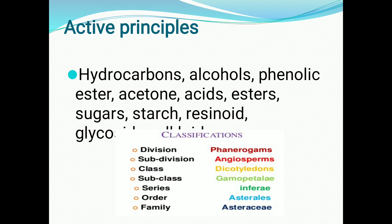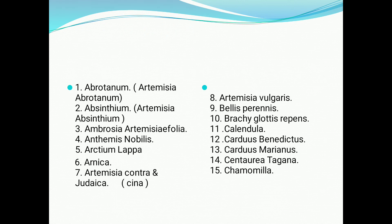The botanical classification of the Composite family is as follows: Division — Phanerogams; Subdivision — Angiosperm; Class — Dicotyledon; Subclass — Gamopetalae; Series — Inferi; Order — Asterales; Family — Asteraceae or Composite.